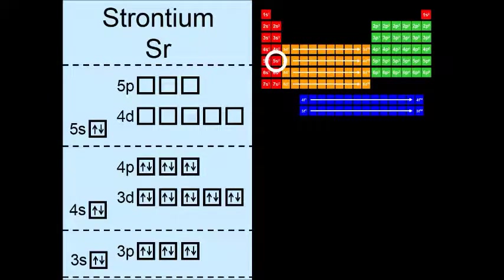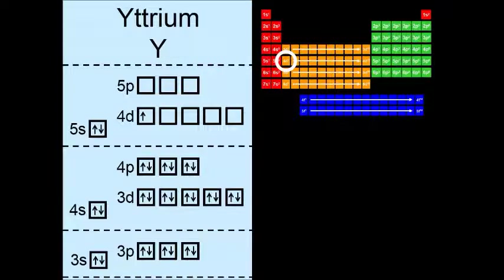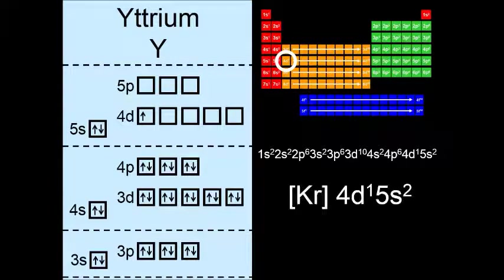And then we have strontium. So krypton 5s2. And now we're filling in the 4d sublevel with the elements from yttrium to cadmium. So here's element number 39, yttrium. And element number 40, zirconium.